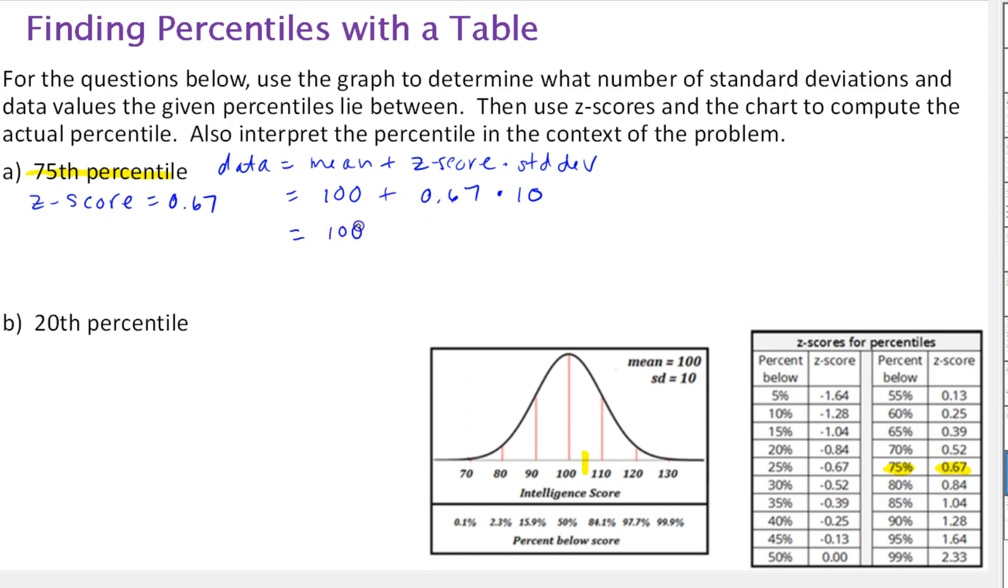So we have 100, you do the multiplication first. That's 6.7, 106.7. So we would interpret that as 75% of the scores lie below 106.7 points.